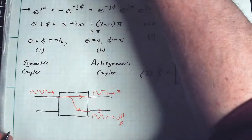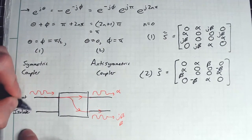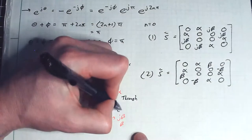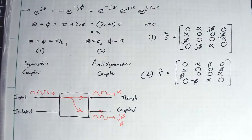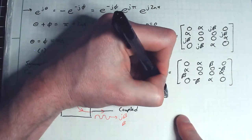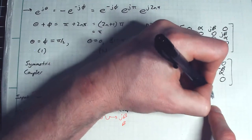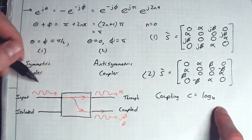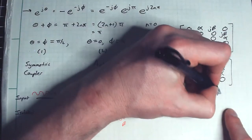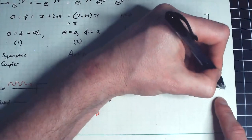There are standard terminologies for the ports: the input port, the isolated port, the through port, and the coupled port. To quantify coupler performance, we define the coupling factor C as 10 times log base 10 of (P1/P3), which works out to negative 20 times log base 10 of beta, in decibels.